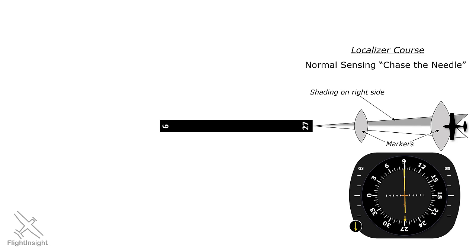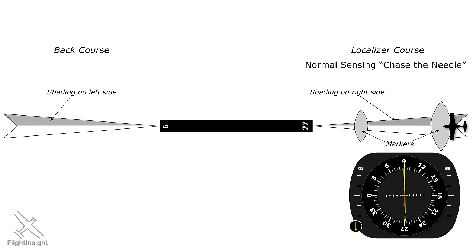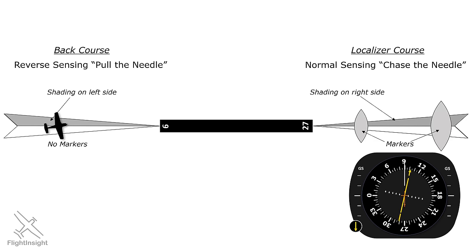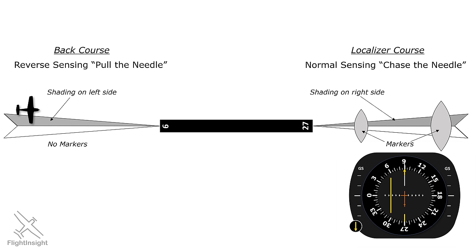The test will also show you this feather symbol — this is a back course and works differently than the localizer. We know it's a back course because the shading is on the left side of the feather and there are no marker beacons. A back course uses reverse sensing, where the motto is: pull the needle. If we deviate to the right of course, the needle swings to the right. And if we're left of course, the needle swings left. In order to get back on course, we don't chase the needle — we pull the needle, meaning we need to fly to the right to get back on course.